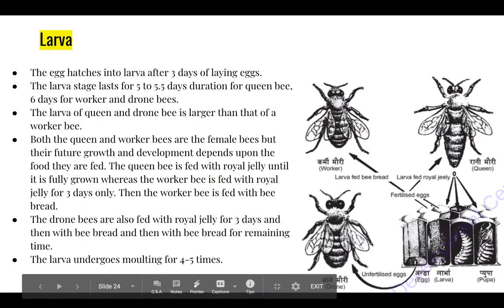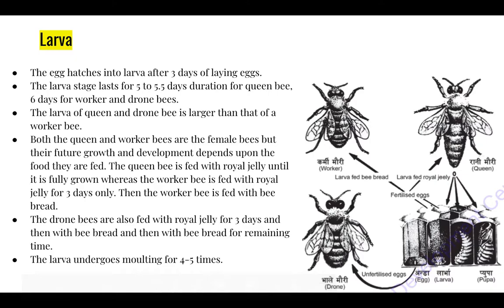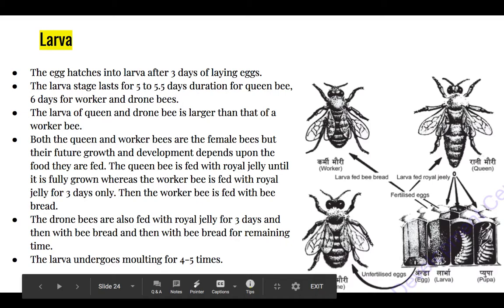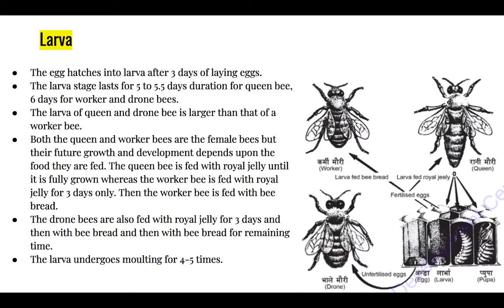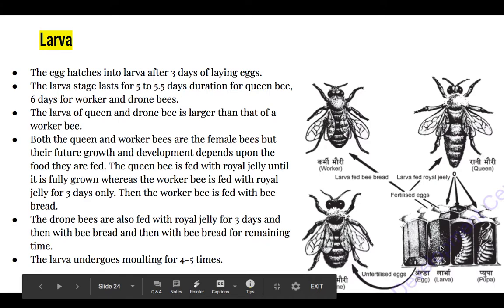If the same larva is fed royal jelly for only three days and then bee bread for the remaining days, it turns into a worker bee. Similarly, a larva that will turn into a drone bee is also fed royal jelly for three days, then bee bread, and it turns into a drone bee. The larva undergoes molting four to five times, which means changing the body's skin.